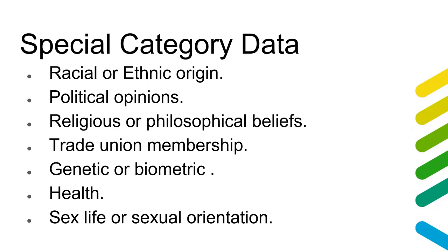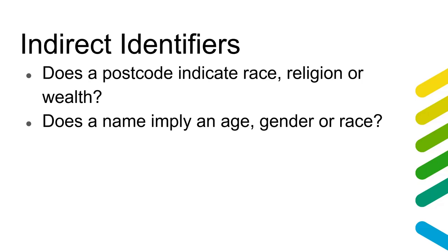Further to this, we have special category data, defined as any data consisting of race or ethnic origin, politics, religion or philosophy, trade union membership, genetics or biometric data, health and sex life or sexual orientation. Finally, we also need to be aware of indirect identifiers. For example, in many regions a postcode can very accurately predict race and religion. Depending on how we open up this data, these individuals may still need protection. As synthetic data does not represent real individuals, we could benefit from simpler confidentiality concerns.